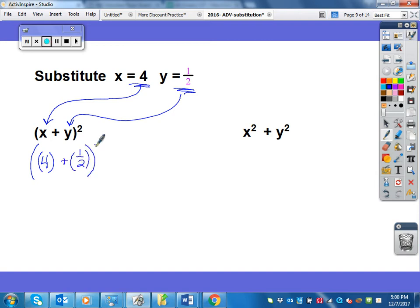And then, I need to square that. So the first thing that it's asking me to do is to go ahead and solve inside the parentheses. So it is at 4 plus 1 half is 4 and 1 half. And then, all I need to do is square that.